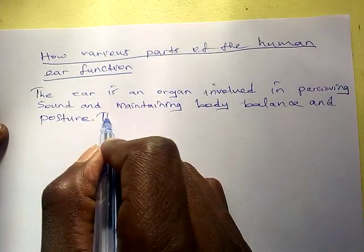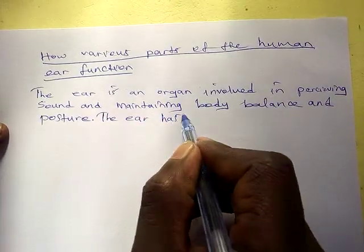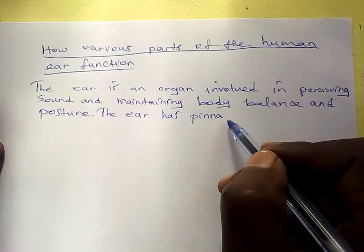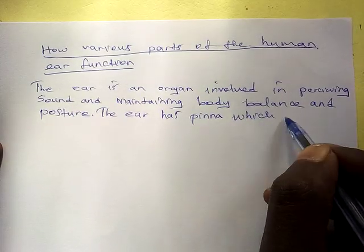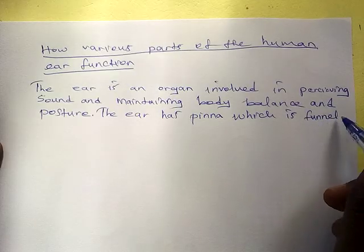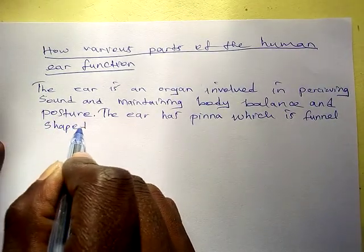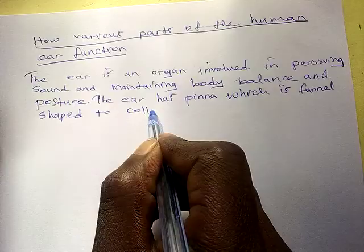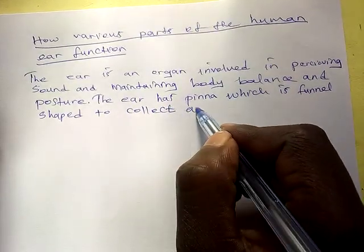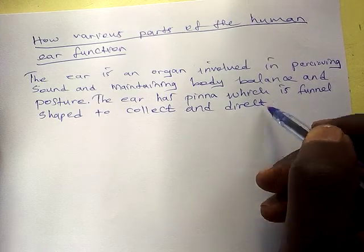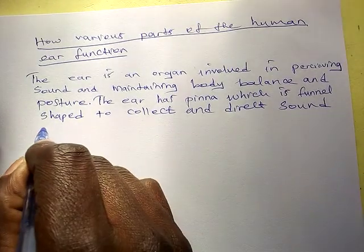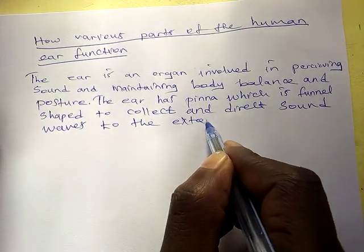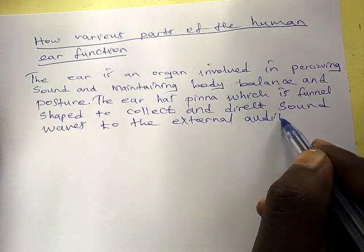The ear has the pinna — you have identified the part. Now the pinna is funnel-shaped. The function of this funnel-shaped structure is to collect and direct sound waves to the external auditory meatus.